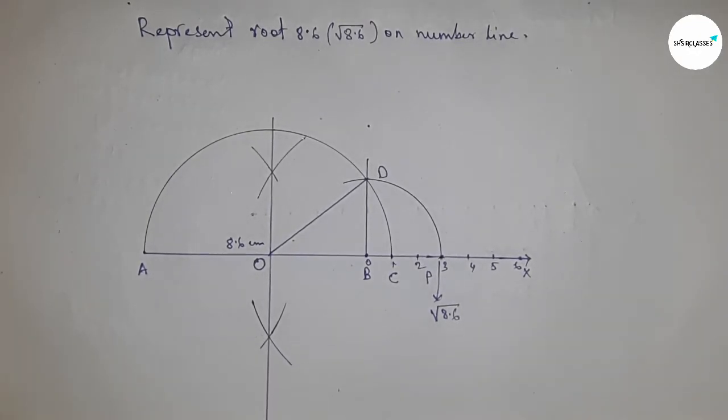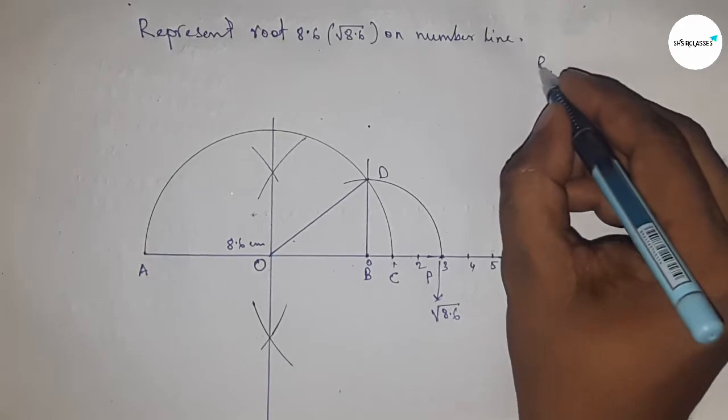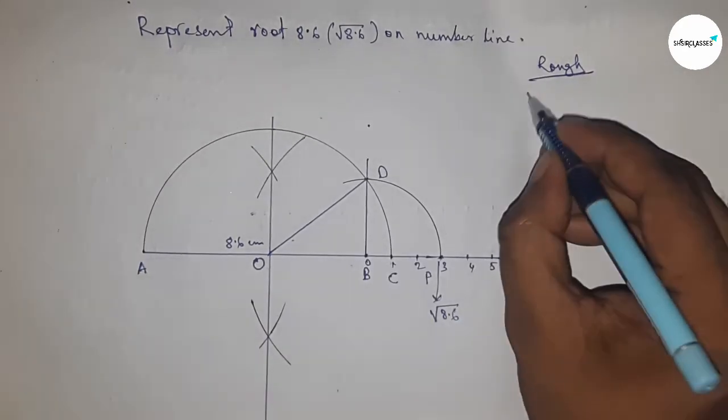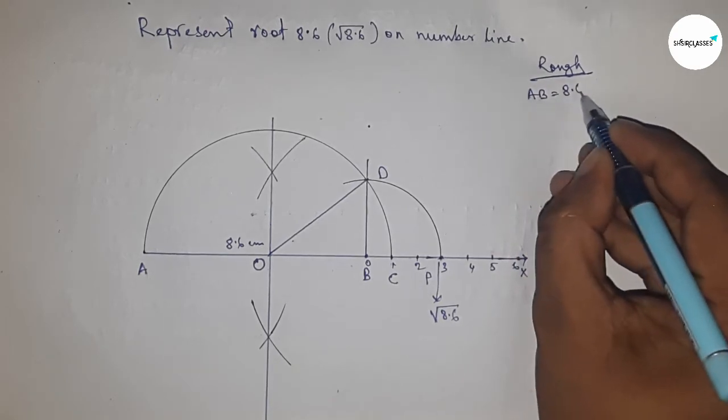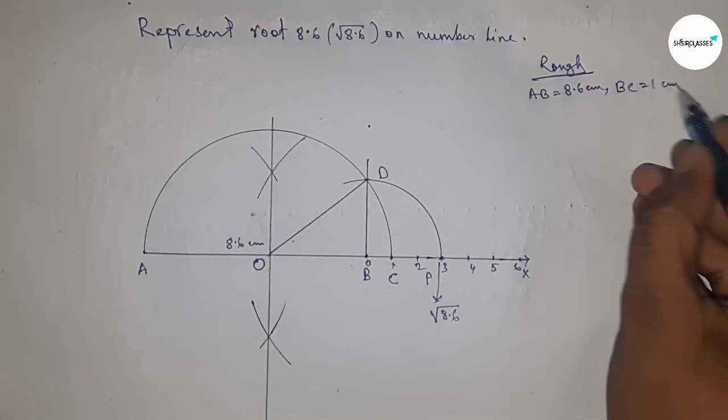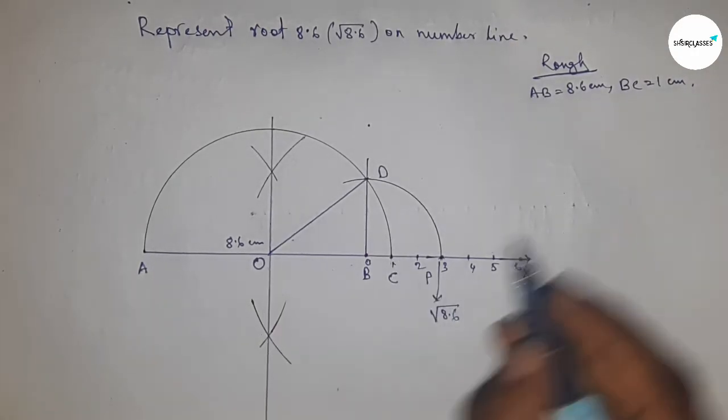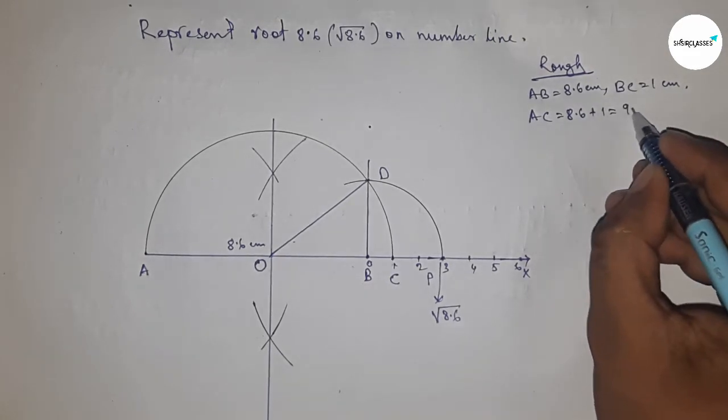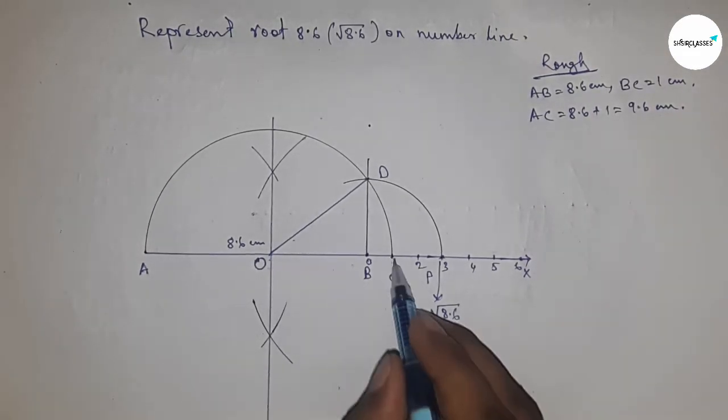Now let's discuss the calculation. Given: AB equals 8.6 centimeters, BC equals 1 centimeter. We can write AC equals 8.6 plus 1, which is 9.6 centimeters.